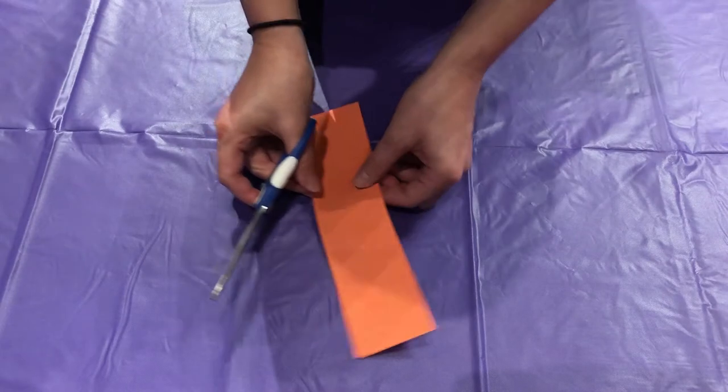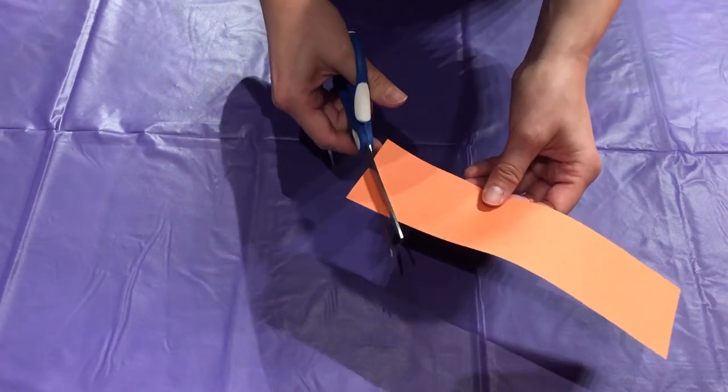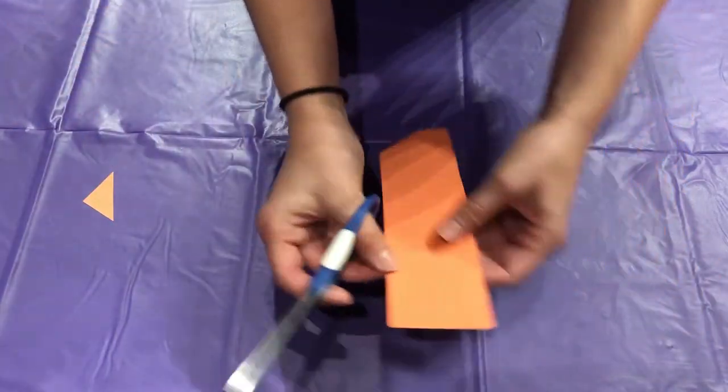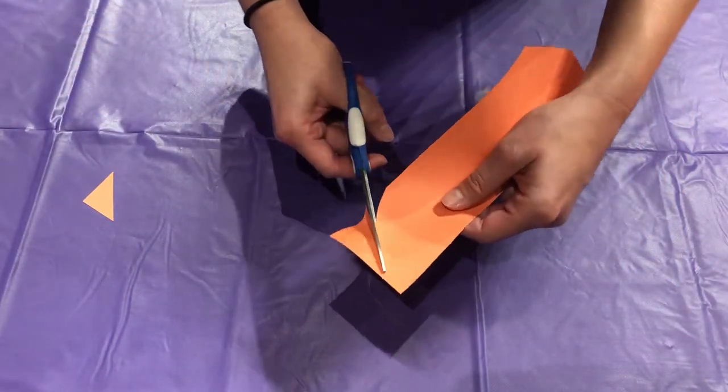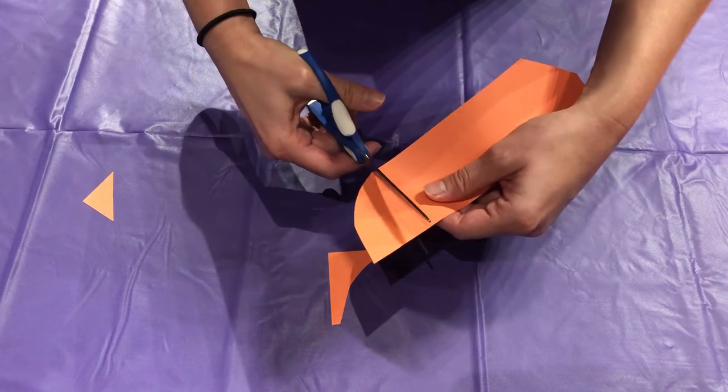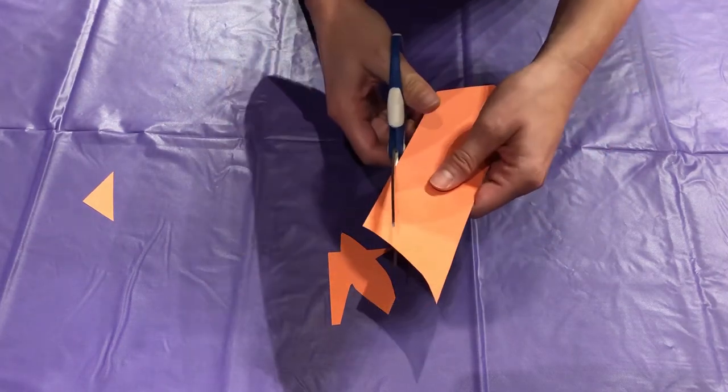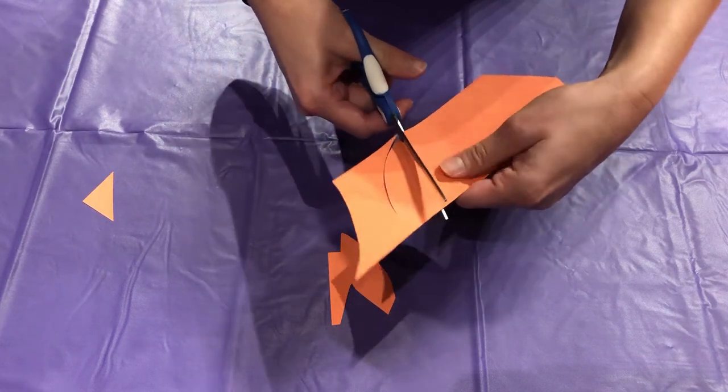So for the beak I just cut the corner like that and that's gonna be its beak. And then for the feathers I just cut them out like this. They don't have to be the same size. They can be smaller or larger.